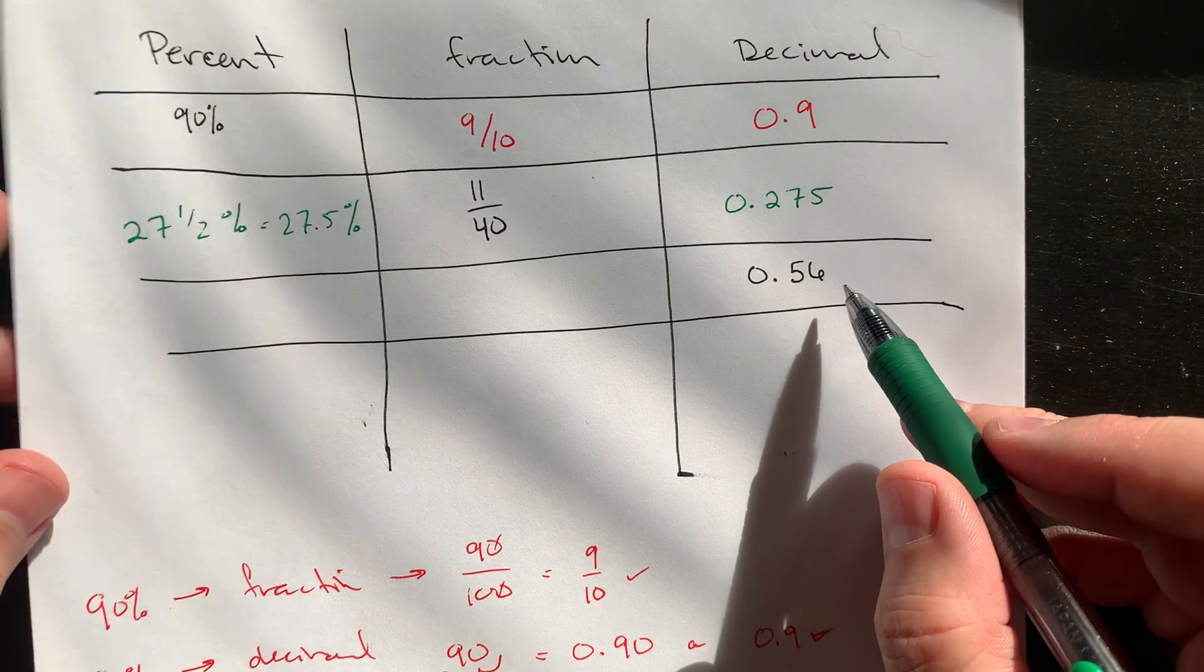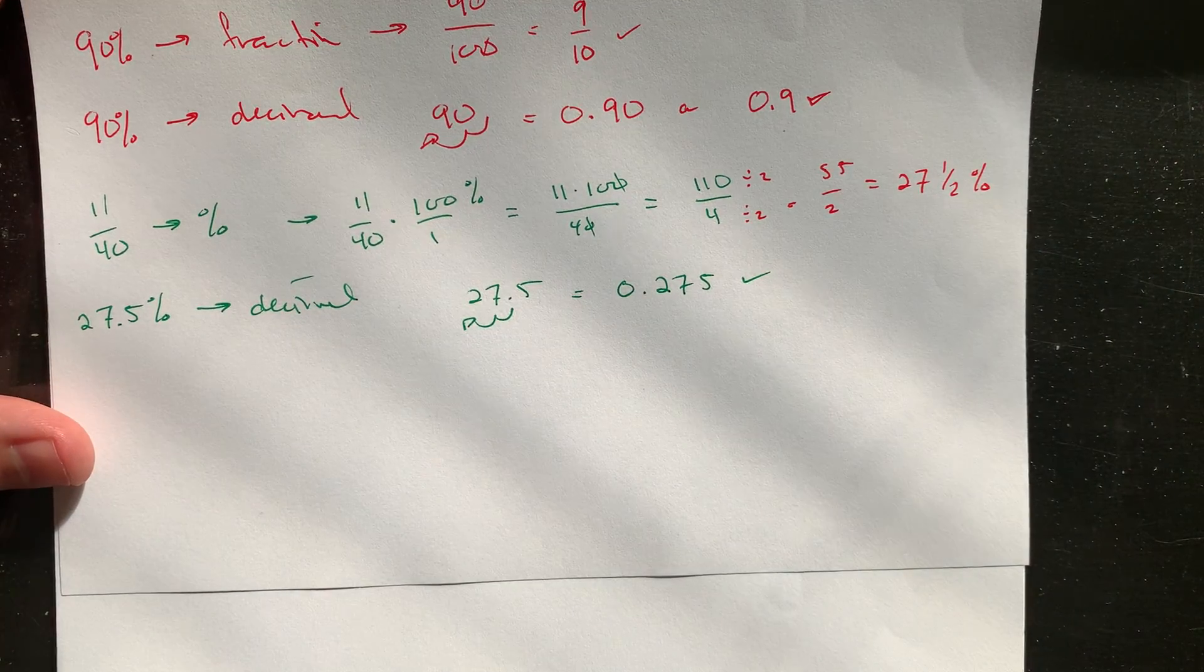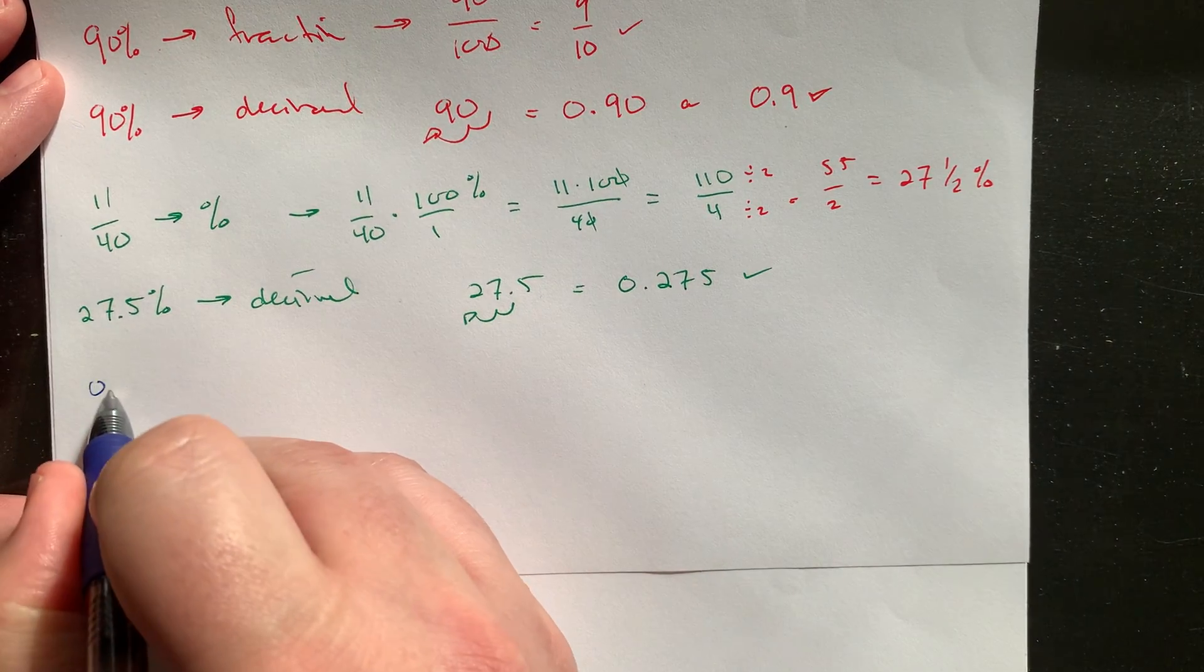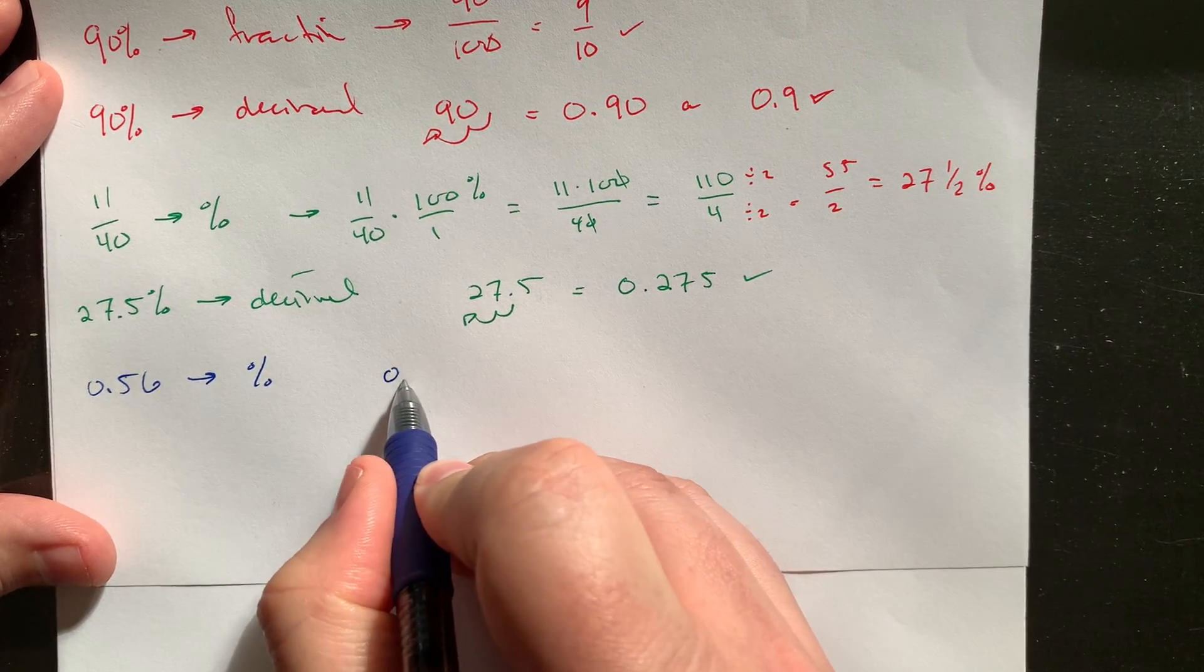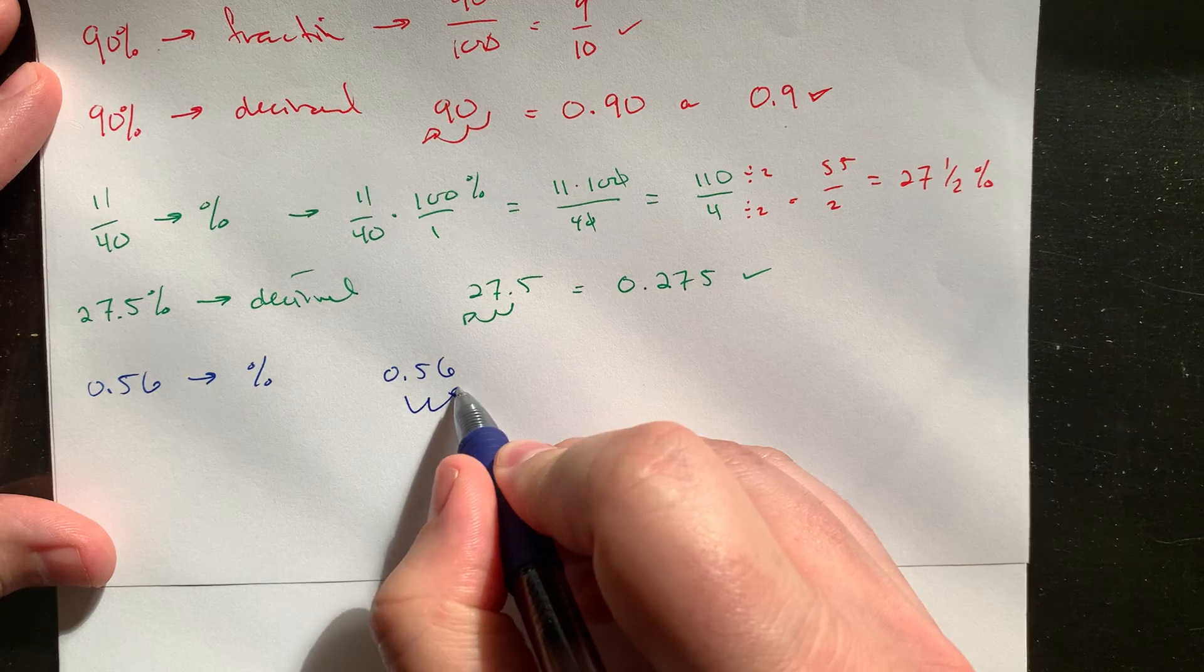Last but not least, if we start with a decimal version, so 0.56, I would say definitely do your decimal to percentage first. Again, percents and decimals just like an easy, our easiest conversion. So that's going to be shifting to the right. So this would be